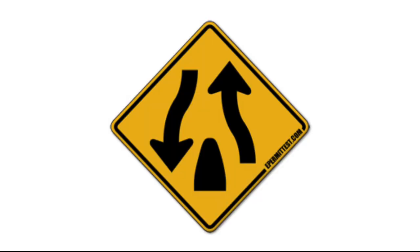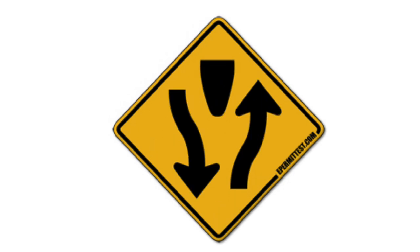Divided highway ends. The divided highway on which you are traveling ends 350 to 500 feet ahead. You will then be on a roadway with two-way traffic — keep to the right of approaching traffic. Divided highway begins means the highway ahead is split into two separate roadways by a median or divider, and each roadway is one way. Keep to the right.